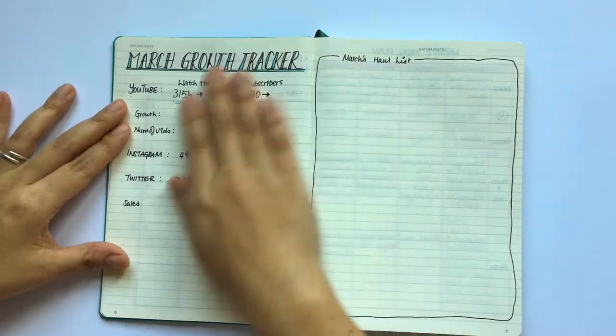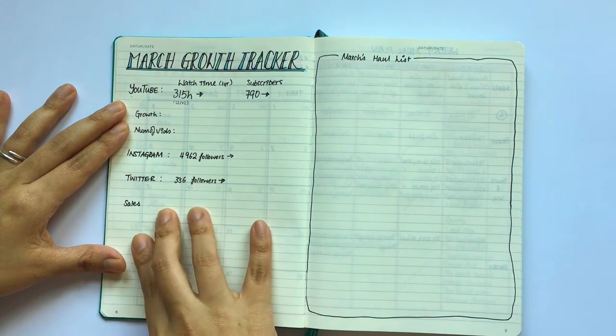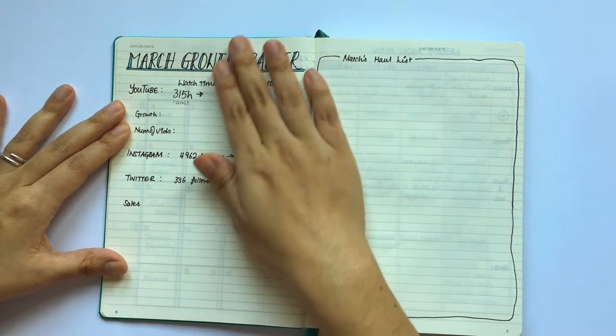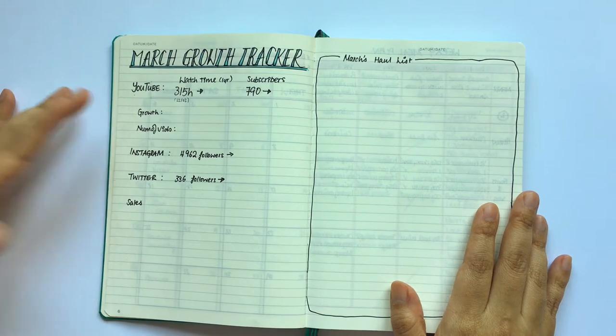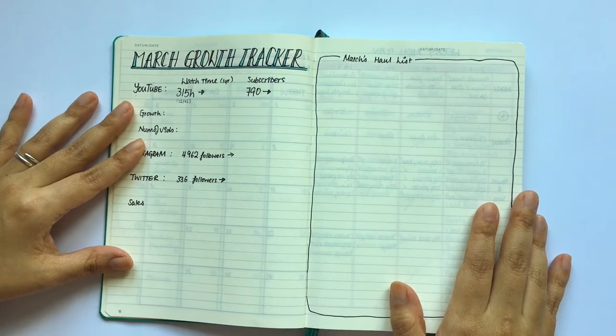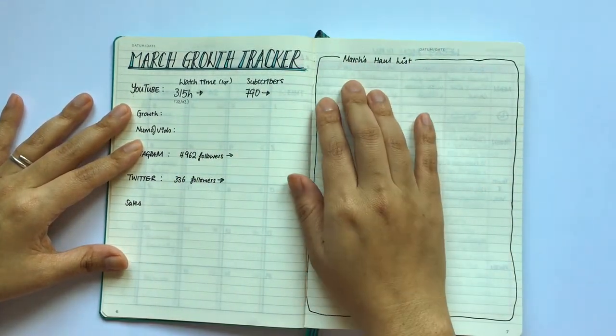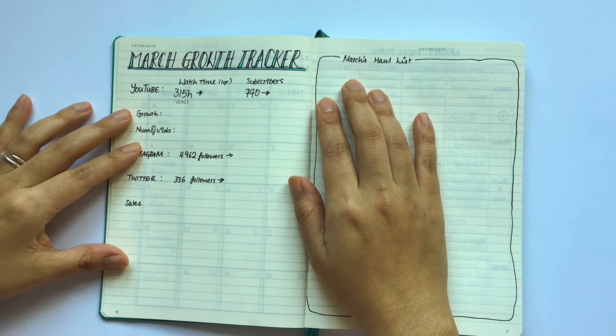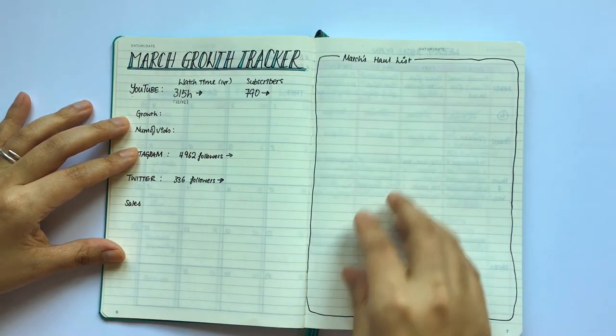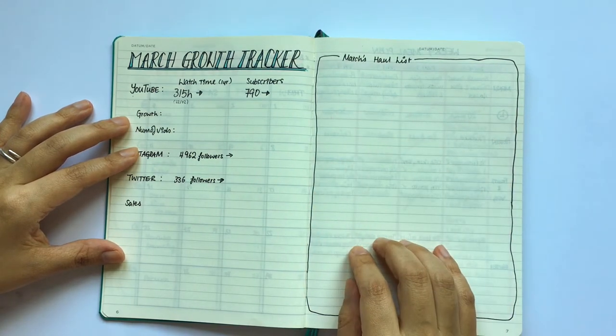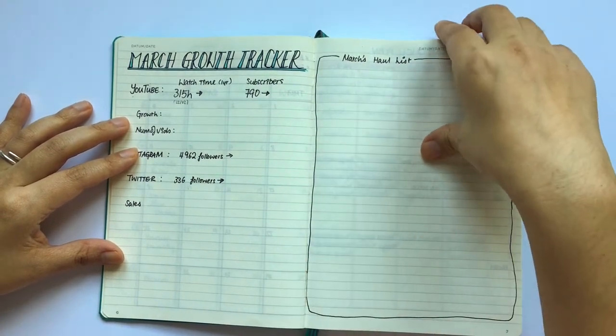And then my March growth tracker. I'm tracking watch time and subscribers on YouTube and then followers and retweets on Twitter and sales. Now last month I had like things I did for the business thing which I didn't end up using because I was too busy doing this stuff and never quite getting around to noting down those things on a separate page. So instead I am going to have a March haul list since I am going to be making a haul video each month of the art supplies I got that month. So this is a great place to keep track of the things I buy during the month because I can't remember what I bought last week, let alone like in four weeks time. So this will be a great list for me.